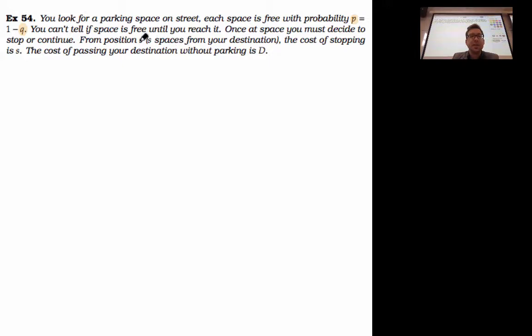Let's suppose that your position is given by s, where s is the number of spaces from your destination. The cost of stopping is s, your distance from the end of the street where you want to end up. If you stop straight away, you're going to have to walk the whole length of the street. But it might be that the very last space isn't taken, in which case you incur some big cost D, because you've got to drive around all over again.